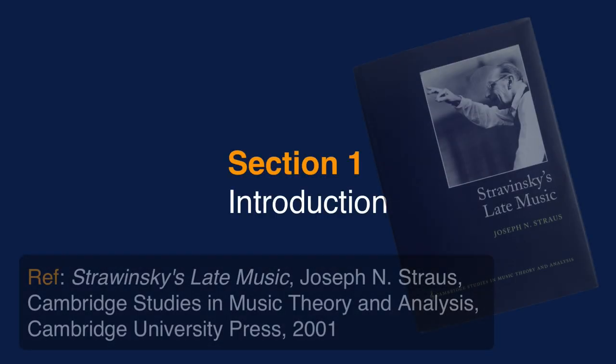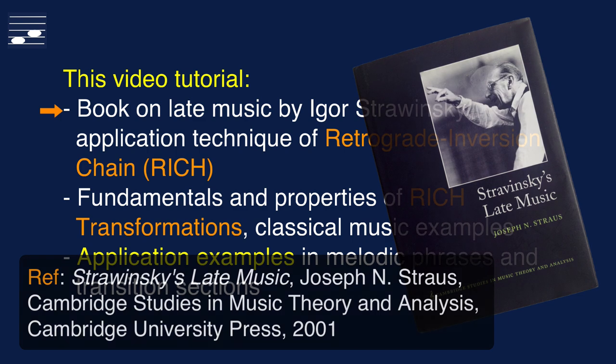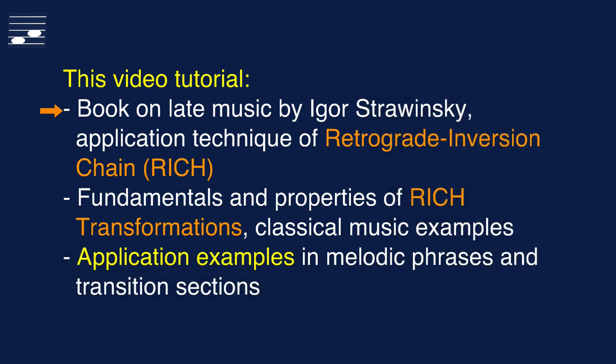While rereading a book on Stravinsky's late music, in the chapters on the compositional process and the creation of form, I was triggered by examples of a technique called Retrograde Inversion Chaining. The acronym is RICH, and in this video I'll explain the fundamentals and properties of RICH transformations. After discussing classical music examples you'll see its application in melodic phrases and transitions.